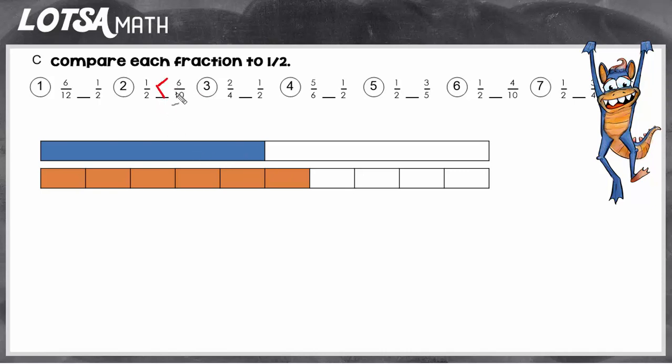But you won't always have the model so what you can do is think of where would half be? Well half of ten is five. So the halfway point would be five pieces as you can see right here. One, two, three, four, five. And since six pieces is greater than five pieces we know that six tenths is going to be greater than a half.